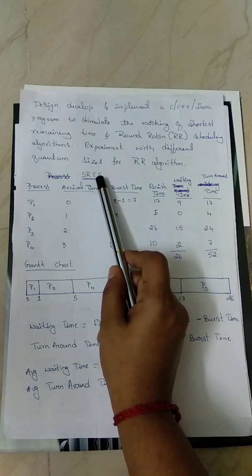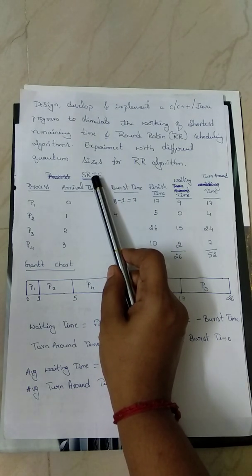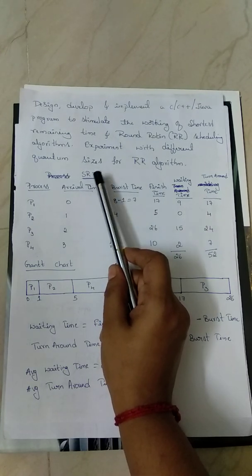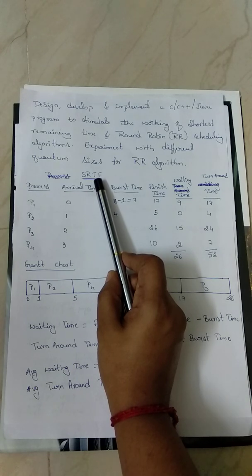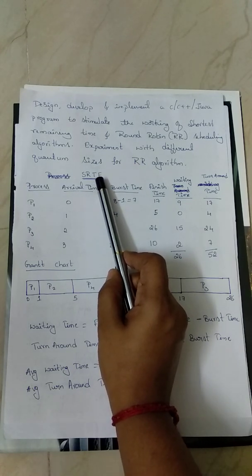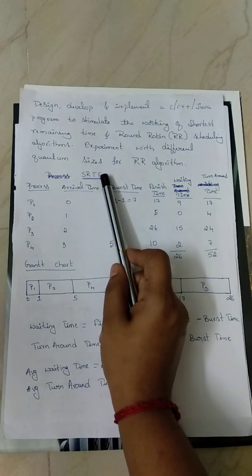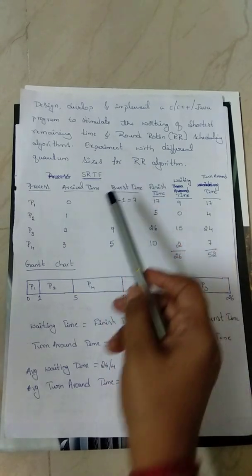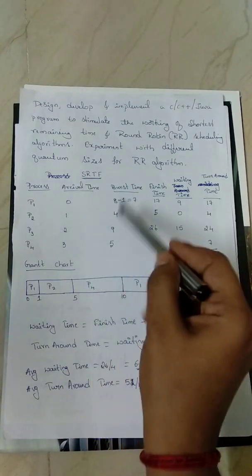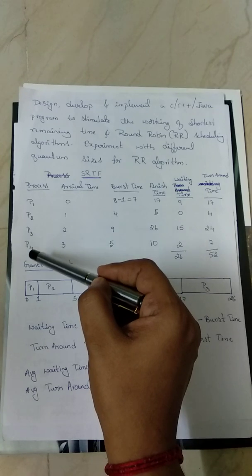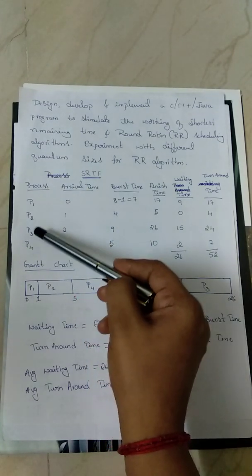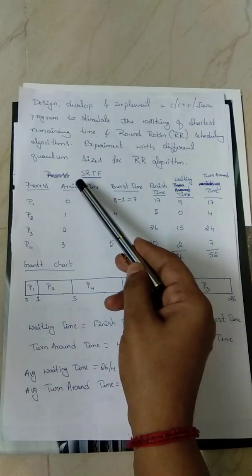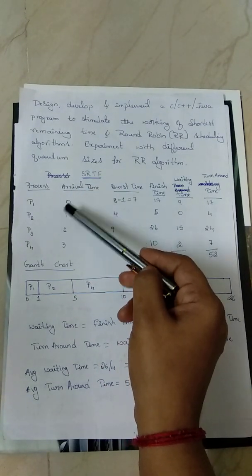This algorithm is one of the process scheduling algorithms wherein the process with the least burst time will be scheduled for its execution. Based on this principle we'll see how this algorithm works for a set of processes. Now let us consider processes P1, P2, P3, P4 with arrival times 0, 1, 2,